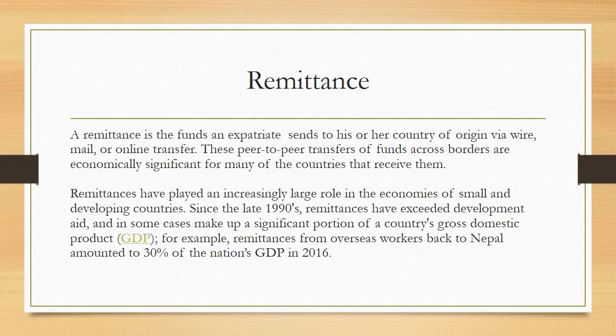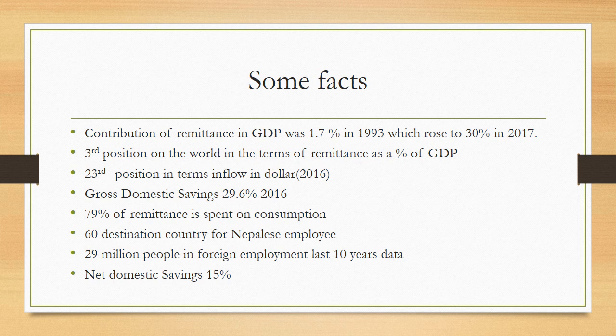Let's consider some facts regarding the Nepalese economy and the contribution of remittance to GDP. The contribution of remittance to GDP was 1.7% in 1993, which rose to 30% in 2007. Nepal holds the 17th position in the world in terms of remittance as a percentage of GDP, and 23rd position in terms of inflow in dollars.